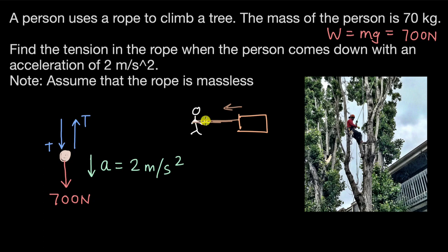So now if we try to draw the free body diagram of the rope, we know that the rope is definitely experiencing a force from the person, which is in this direction, because the rope is experiencing a pull from this end. The person is pulling the rope at this end.